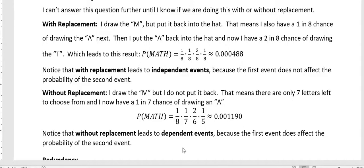So notice that without replacement leads to dependent events. Because by drawing that first one, it changes the probability of everything on down. So dependent events affect each other probability-wise. And independent events don't.